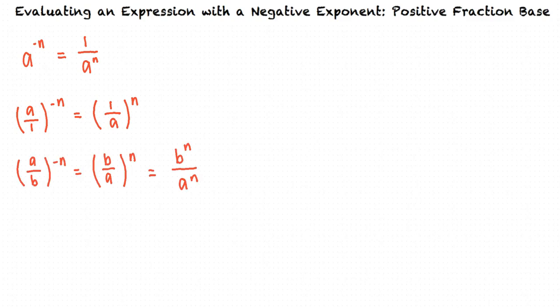a over b raised to the power of negative n equals b over a raised to the power of positive n, which is equal to b raised to the power of n divided by a raised to the power of n.